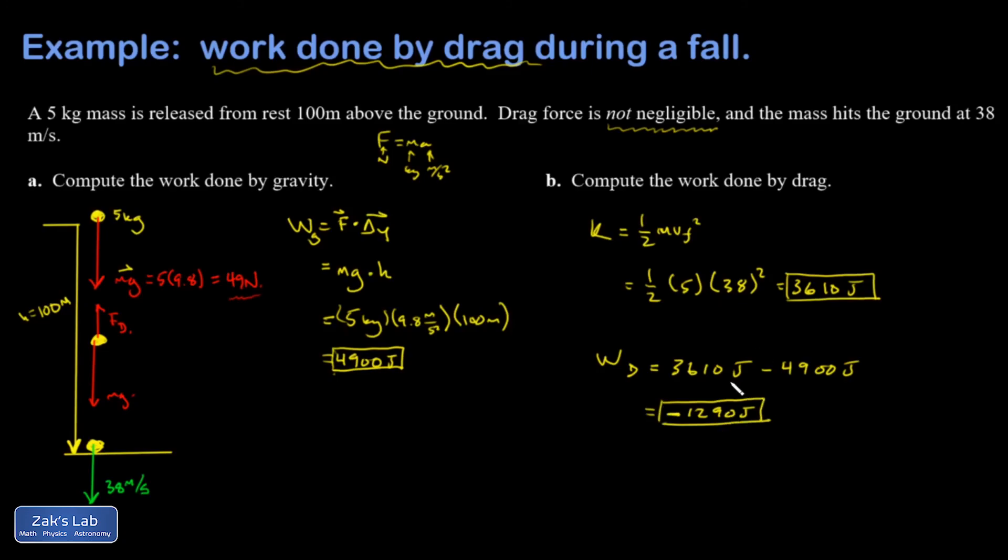And I get negative 1290. Again in practice I would just go what's the missing energy, so the way I actually typed it into my calculator was 4900 minus 3610, and then I said oh but it's got to be negative. So that's good enough.